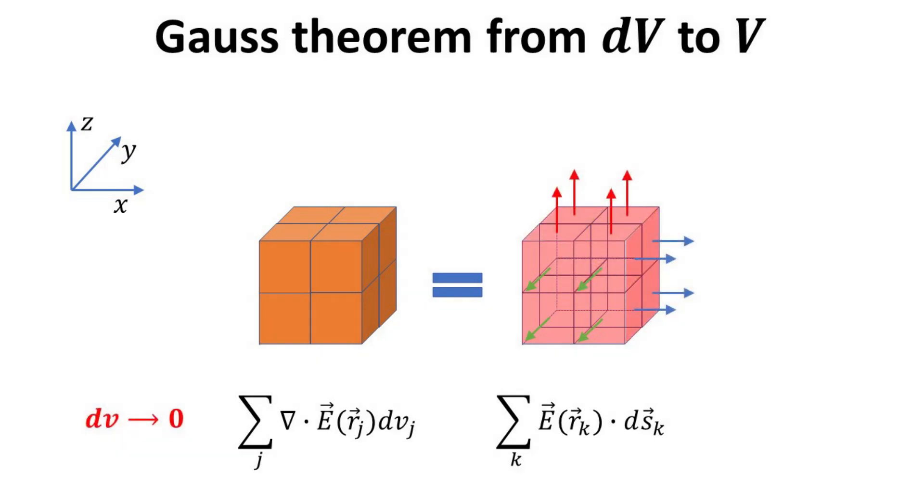In the limit where dV goes to 0, then the discrete summation can be converted into a continuous integral which then gives us the well-known Gauss divergence theorem, which states that integrating the divergence of the field over an enclosed volume V is equal to calculating the flux emanating from the surface that encloses the volume.